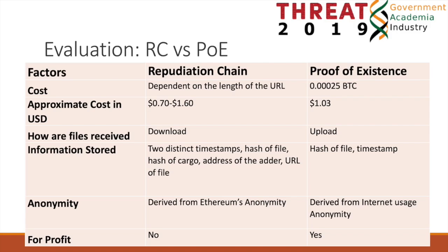The reputation chain was compared against another non-repudiation service called Proof of Existence. Key metrics showed the reputation chain was cheaper, users don't have to download and upload the file they wish to secure, it has multiple redundancies, and its anonymity is derived from Ethereum's anonymity rather than general anonymity provided by the internet.